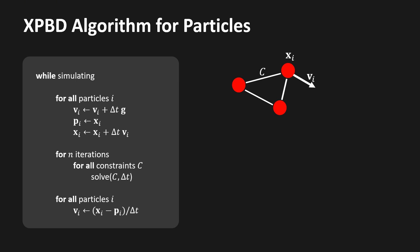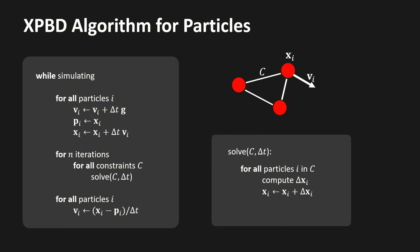After the integration, we solve all constraints, repeating this for a given number of iterations. One of the most used constraints is the distance constraint, used in cloth and soft body simulations. It makes sure the distance between pairs of particles equals the rest distance. After solving all constraints, the velocities of the particles are updated — the new velocity is set to the position after the solve minus the position before the solve, divided by delta t. In position-based dynamics, we solve a constraint by computing correction vectors delta x for all participating particles, which are immediately added to the particle positions.